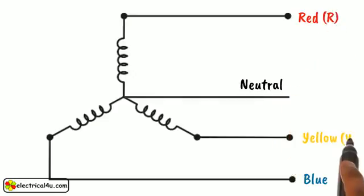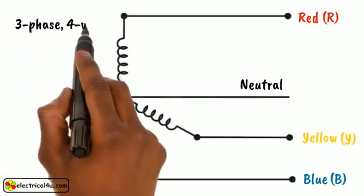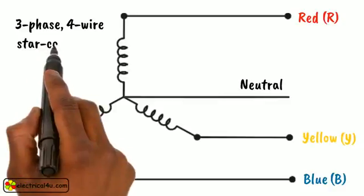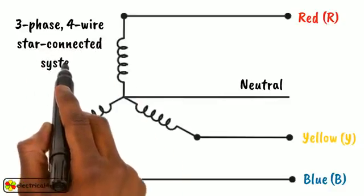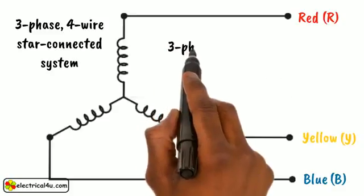Or R, Y, and B. This is a three-phase, four-wire star connected system. This is because there is a neutral wire in addition to three-phase wires. If there is no neutral wire connected to the system, it is called three-phase, three-wire star connected system.